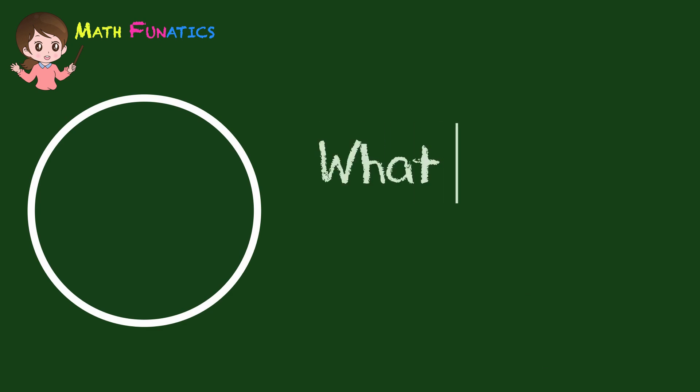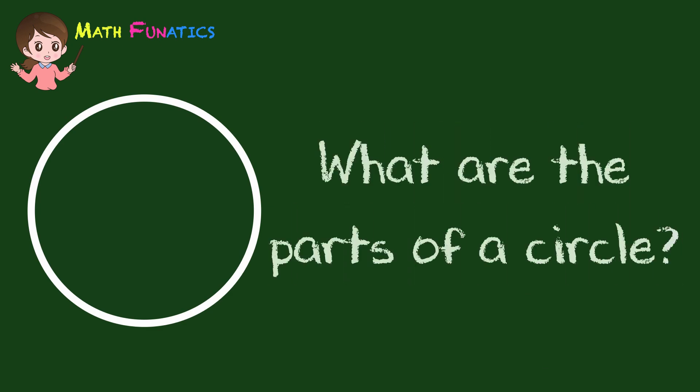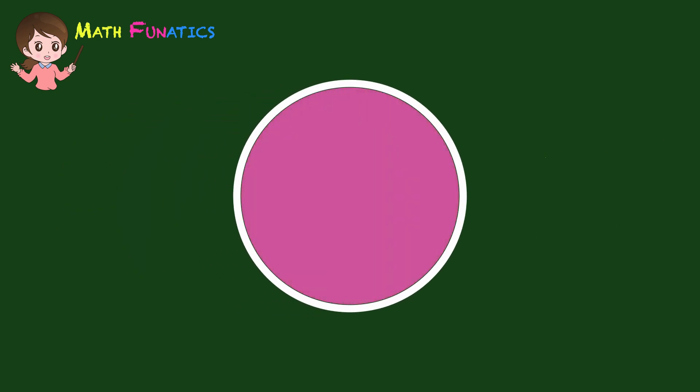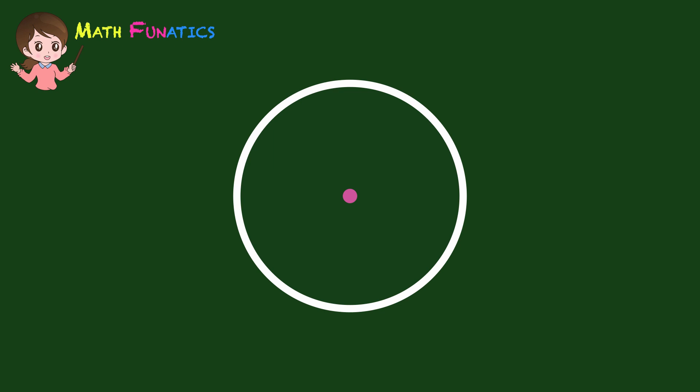Now let us identify the different parts of a circle. First is the surface. This is the part that is enclosed within the outline of the circle. Then we have the center. This is the point that is equidistant from all the points on the circle.